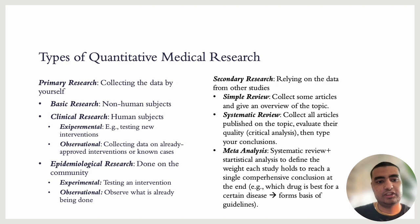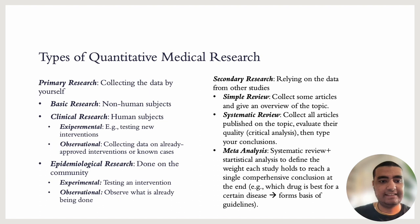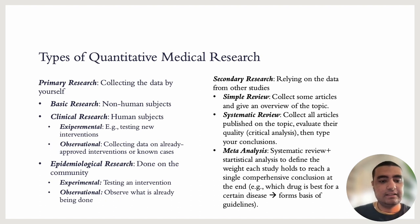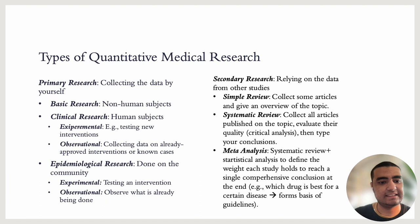Clinical research can be experimental — for example, a clinical trial like the vaccines for COVID when they came out. Then we have observational clinical research, where we collect data of an already known intervention or known cases and try to figure out more information about, for example, prognosis or diagnostic capabilities. Then we have epidemiological research, which is the focus of our studies. It's done on the community as a whole, not on specific clinical cases or diseases, and it can also be divided into experimental and observational.